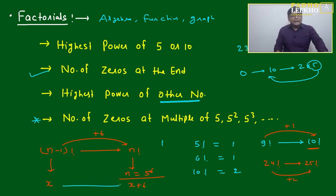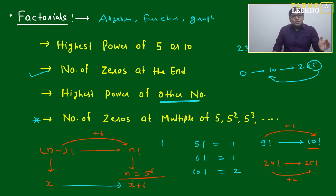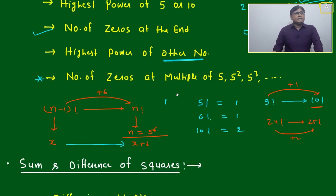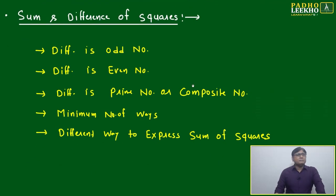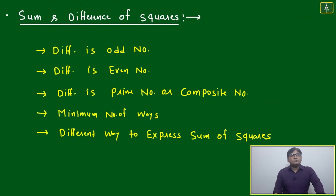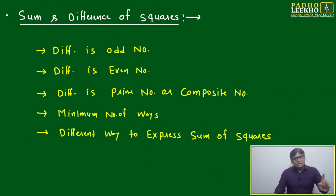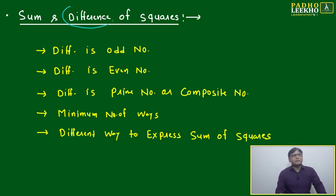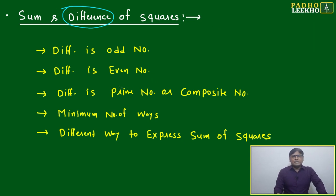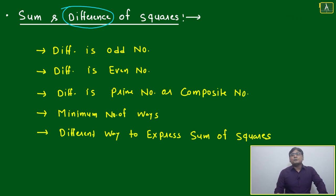After x zeros, directly you will get x + 6 zeros — you won't get x+1 or x+2. That's the idea for factorials; plenty of questions are framed on this. The next topic is sum and difference of squares. Last year and CAT 2019 both had questions based on difference of squares — approximately every one or two years, questions appear on difference of squares or sum of squares.